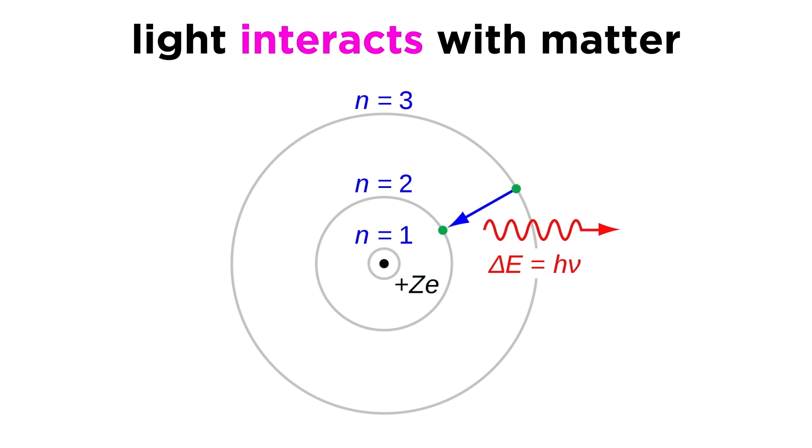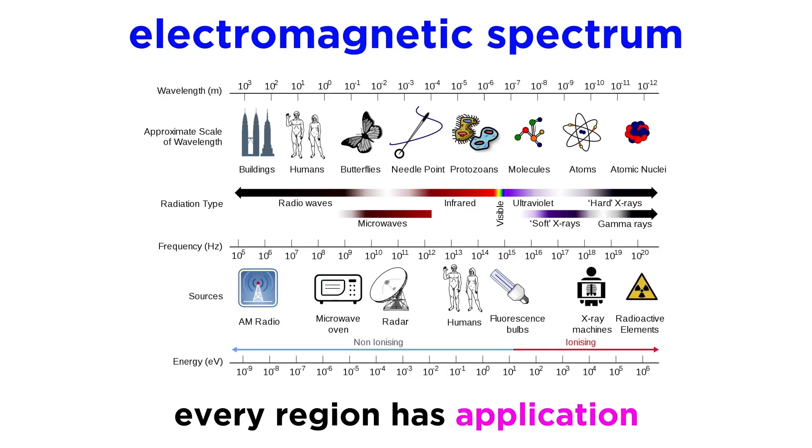Electromagnetic radiation is relevant to chemistry because of the way light interacts with matter, giving us information about the energies of the electrons in an atom. We've also used electromagnetic radiation to create all kinds of technology, like microwaves, x-rays, and radio waves, to make our lives easier and to help us communicate.